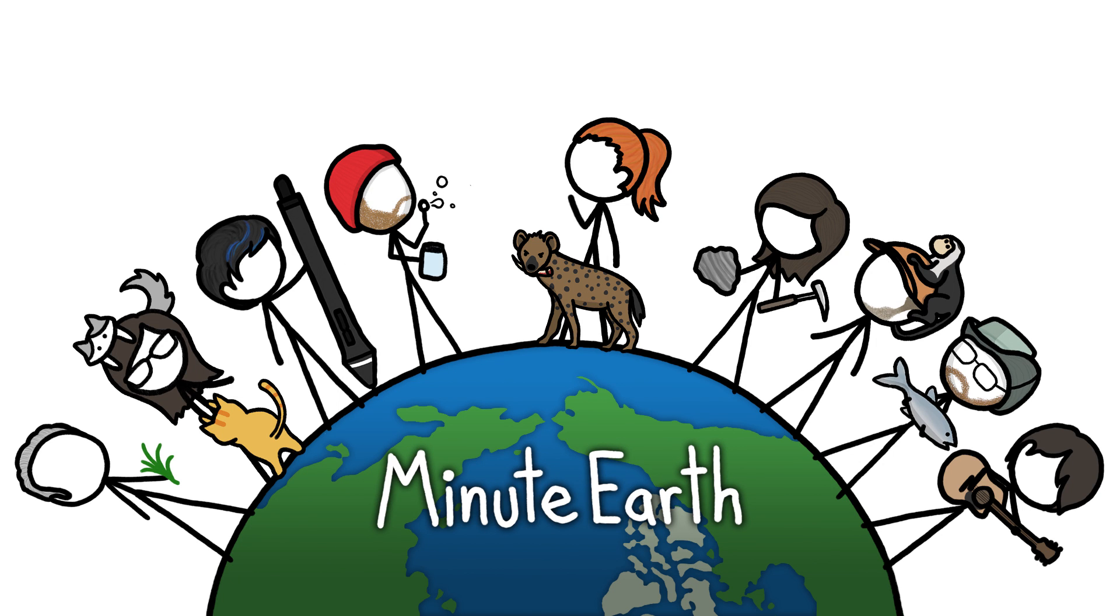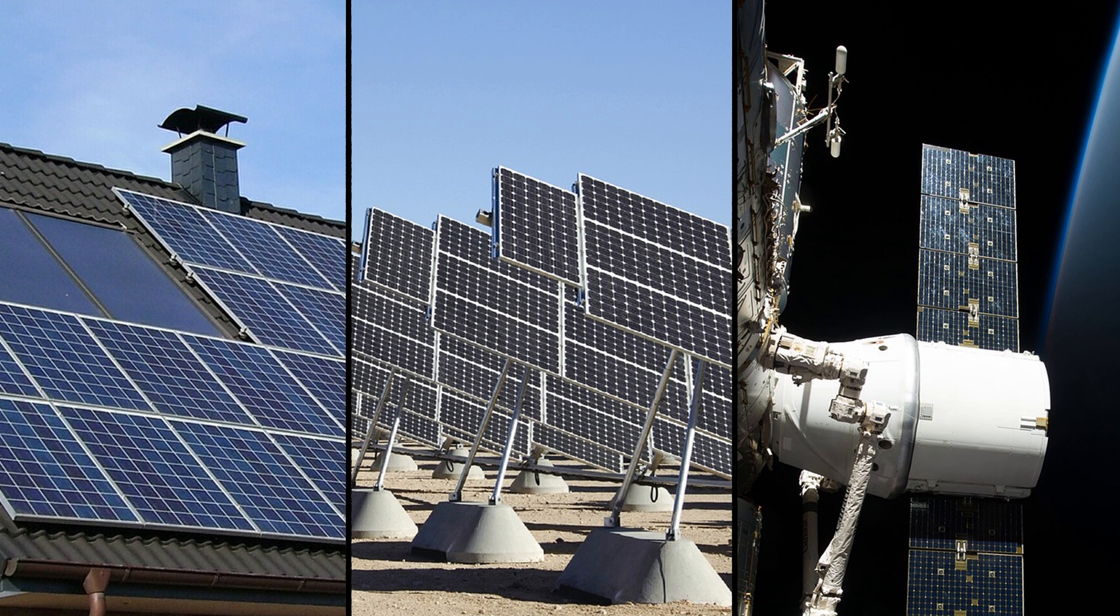Hi, this is Kate from MinuteEarth. Solar panels pretty much only come in one color: dark.